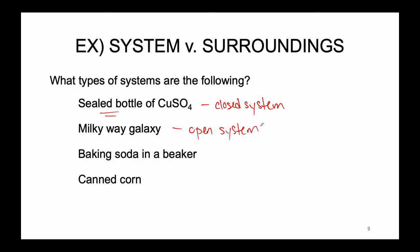Next: baking soda in a beaker. Again, not the entire universe, so not isolated. The key distinction between closed and open is whether matter can be exchanged. Nothing states there is a lid on the beaker, so even though matter won't spontaneously fly out, if the beaker were tipped over or left sitting, dust could settle in. Because matter can be exchanged, we define baking soda in a beaker as an open system.